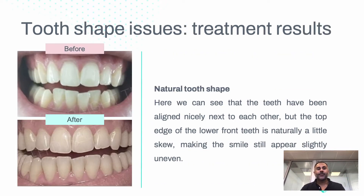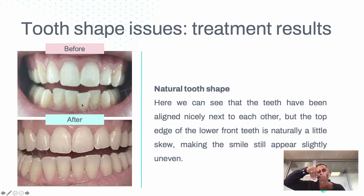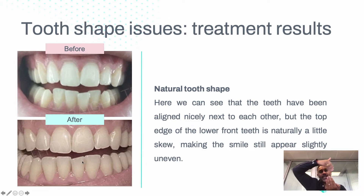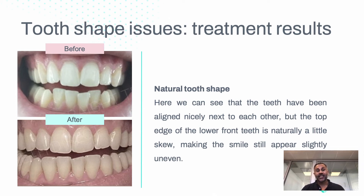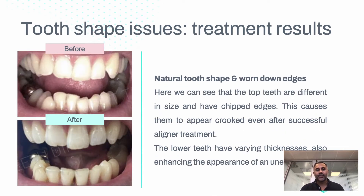Here's an example where the front teeth are overlapping, and the same with the lower teeth. This tooth was further outwards — when the person chews and moves from side to side, the edge was going at an angle on the other teeth, so it wore down at an angle. So even though the teeth are straight, it looks uneven because the edge is like that — and there's a very simple solution.